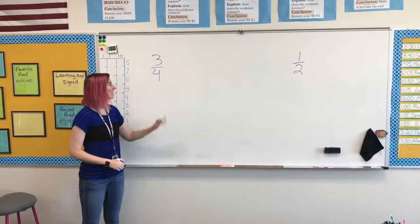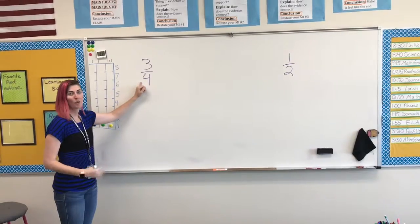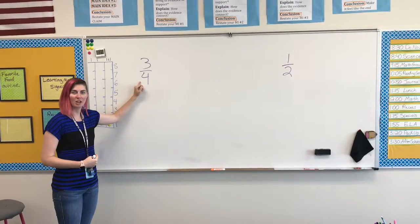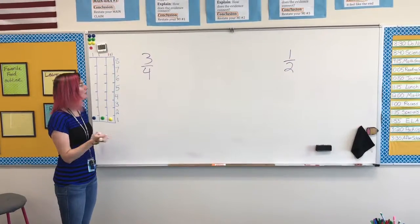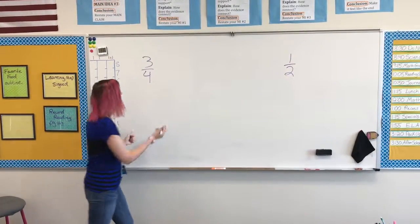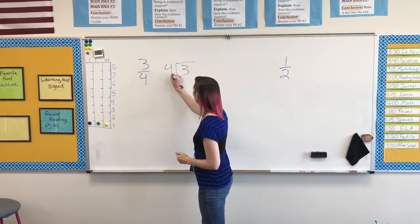In this video, we're going to be turning fractions into decimals. We'll start with 3 fourths. Remember, we can read fractions like division equations. So this is really 3 divided by 4. We're going to set it up like a division equation: 3 divided by 4.